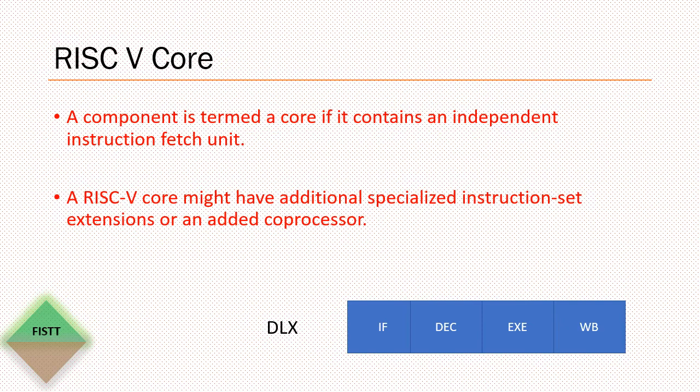The RISC-V standard has two parts: privilege spec and unprivileged spec. We will see later what these are, but for now, the unprivileged spec section 1.1 discusses what is the RISC-V core. It says a component is termed RISC-V core if it contains an independent instruction fetch unit. That's it. Simple.